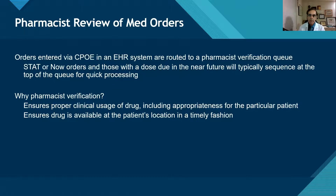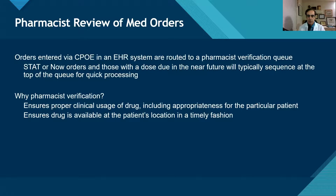We have to review every medication order before the first dose is given, administered, or taken by the patient. With CPOE and our EHRs, we have immediate notification that there's a new order, and then we can check that order. Once we check that order, it can be interfaced to our automated dispensing cabinets — one of the most used automation devices within our acute care setting. Pharmacist verification of CPOE orders can result in that order going through an interface to the appropriate machine, allowing the nurse to remove that medication and administer it to the patient in a timely fashion.